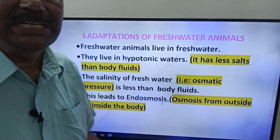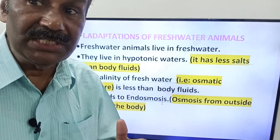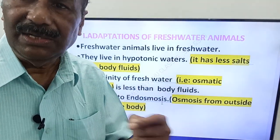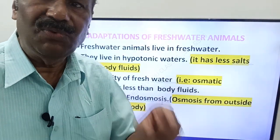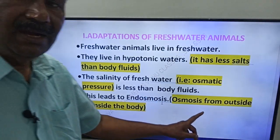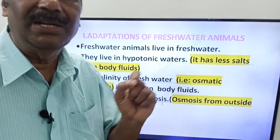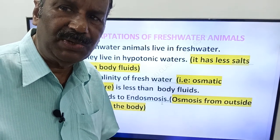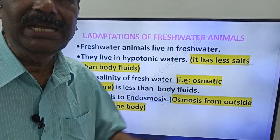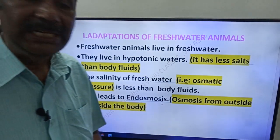Endosmosis: the flow of fluids from outside to inside the body. The osmotic pressure of fresh water is less than the body fluids. Water moves from the fresh water into the body of the animal. In fresh water animals, we observe endosmosis — osmosis from outside to inside the body of the fresh water animal.